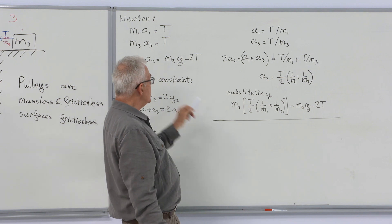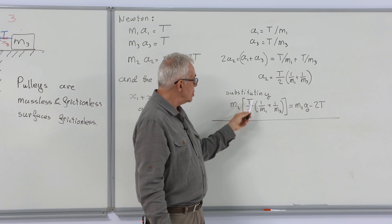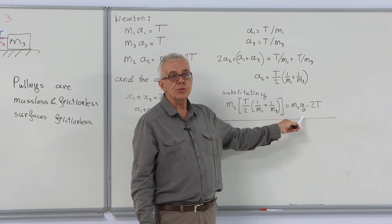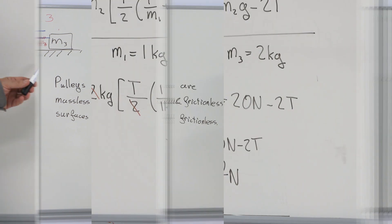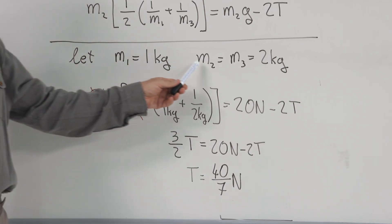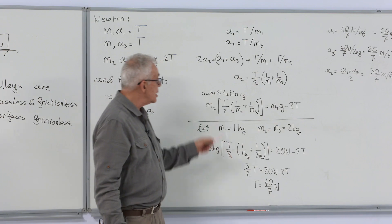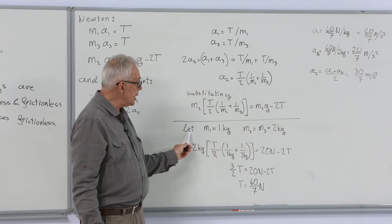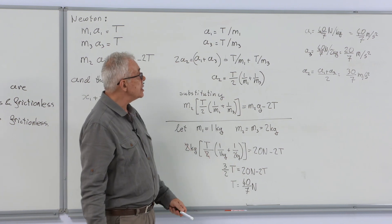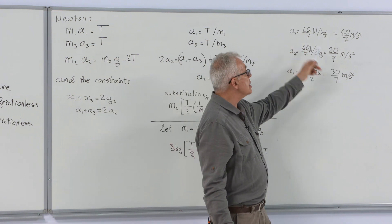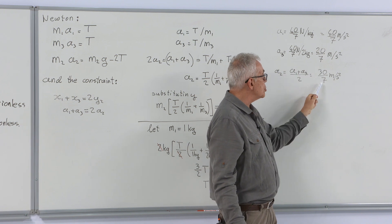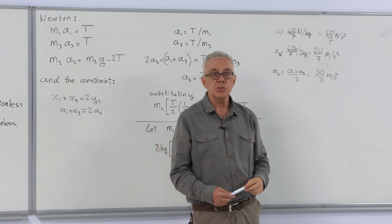Substituting in this equation, I get m2, T over 2, 1 over m1 plus 1 over m3 is equal to m2g minus 2T. We will now assume that m1 is 1 kilogram and the other two masses are 2 kilograms. Substituting the values here, we see that the tension is 40 over 7 newtons, and the accelerations are 40 over 7, 20 over 7, and 30 over 7 meters per second square.